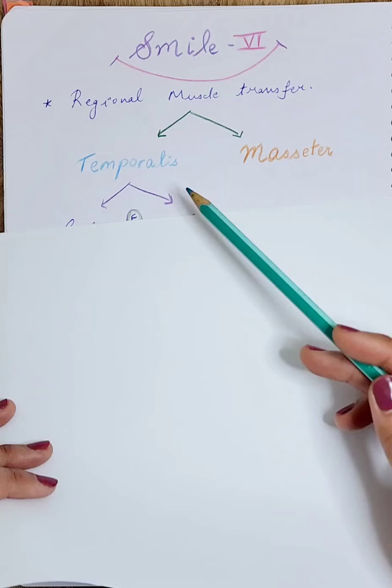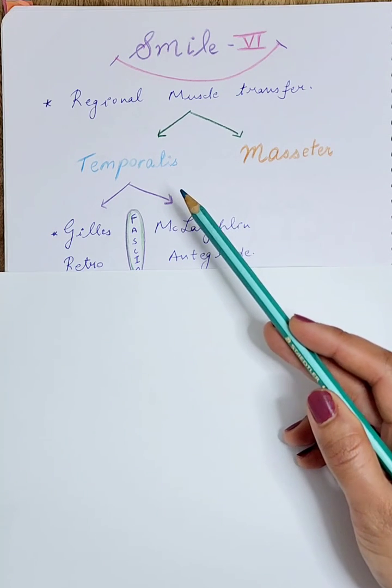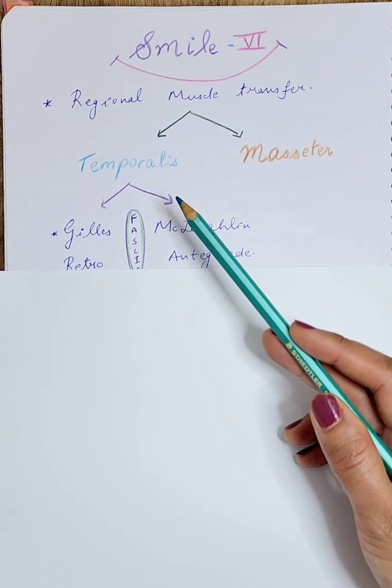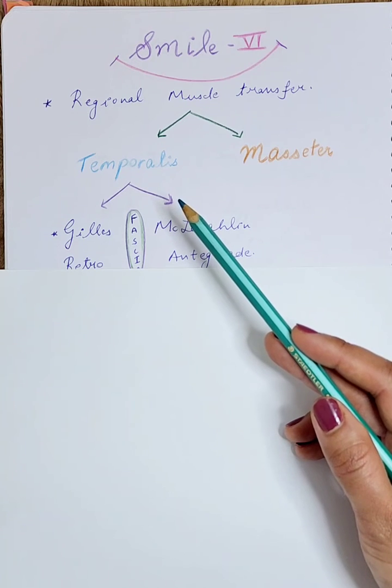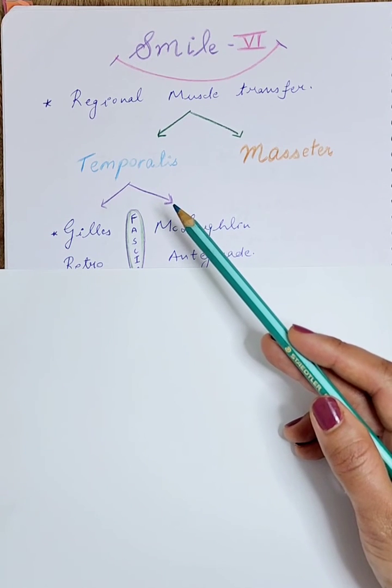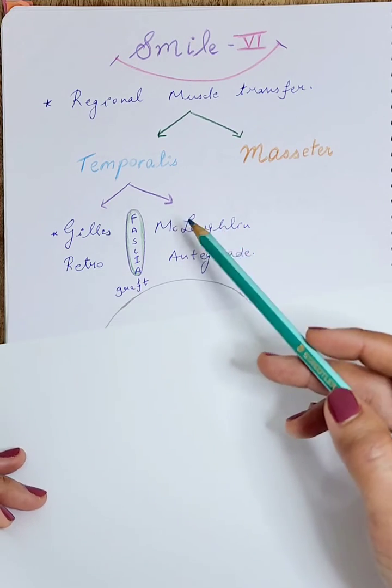How is the temporalis muscle transferred? In initial videos, we've seen the use of the temporalis muscle for eye closure to replace the action of the orbicularis oculi. Here we will see how it can be used for smile reanimation instead. Usually, a temporalis transfer is done with